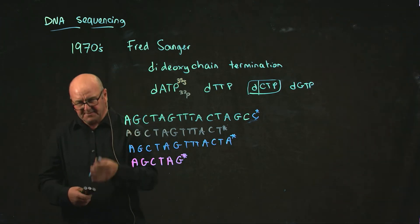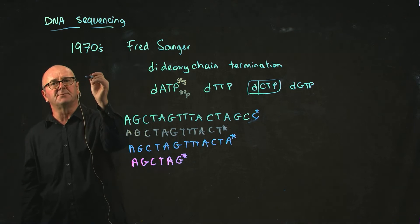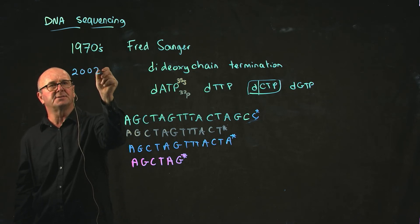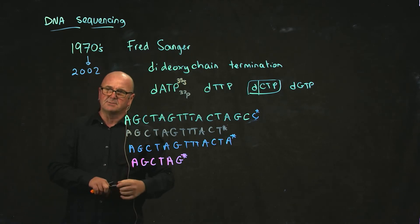So this was the dominant sequencing technology. Fred Sanger developed this technique in the 1970s and it was really the dominant sequencing technology up until about 2002. So for a long time it was the dominant sequencing technology.